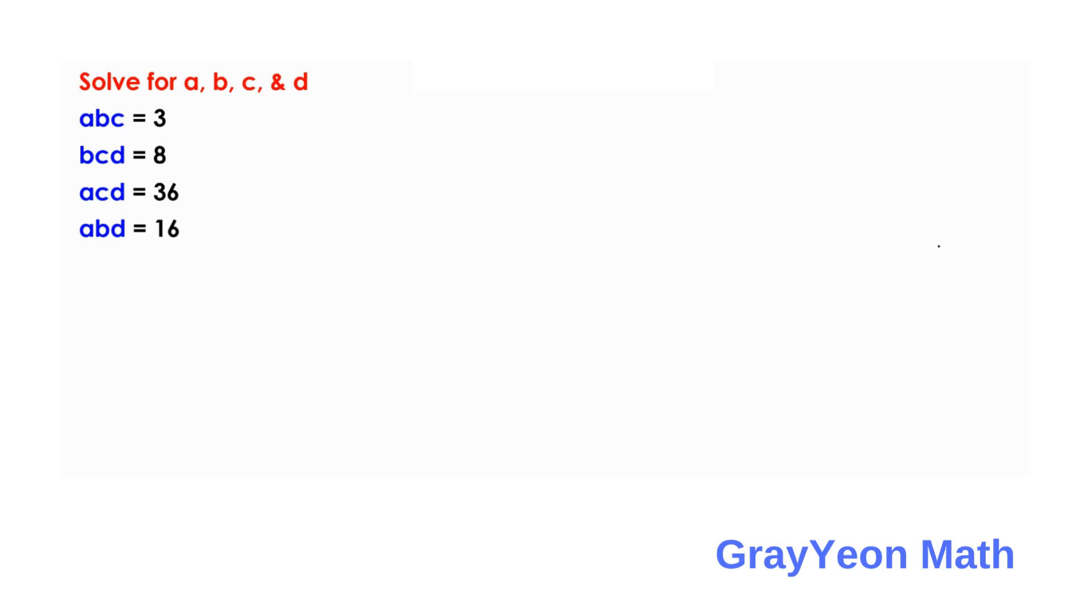So, first thing we have to do is we label the following equations 1, 2, 3, 4. Okay, so next step is we multiply all these equations.